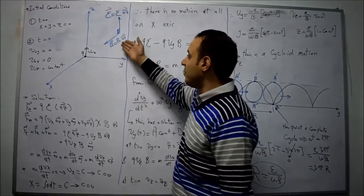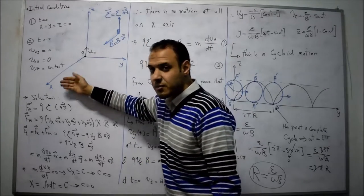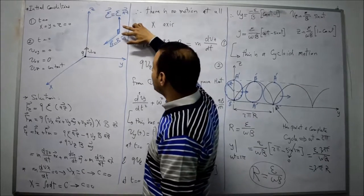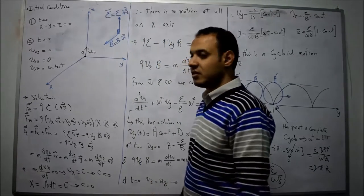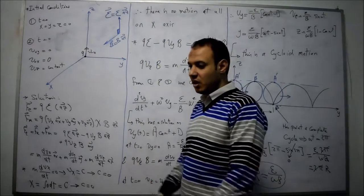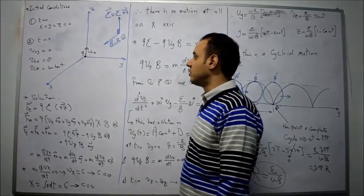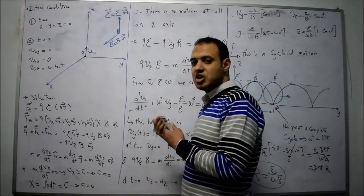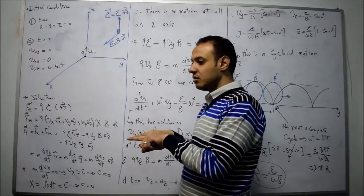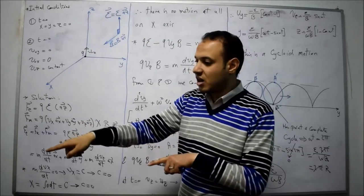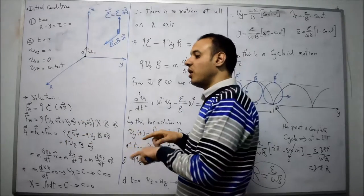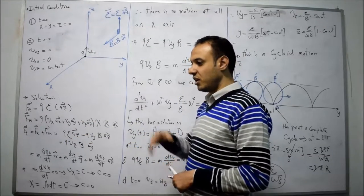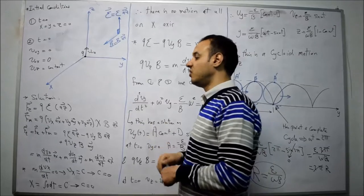We have the electric field in the direction of x and the magnetic field in the direction of z, so they are perpendicular to each other. In the last lectures they were parallel — either both in the x direction, or one opposite to the other, one in x and one in minus x.